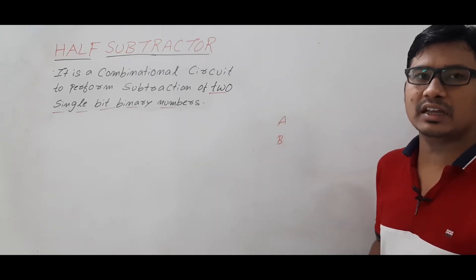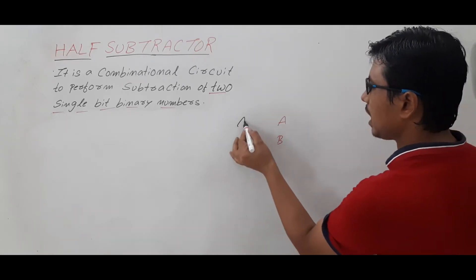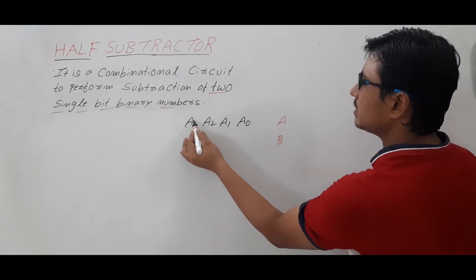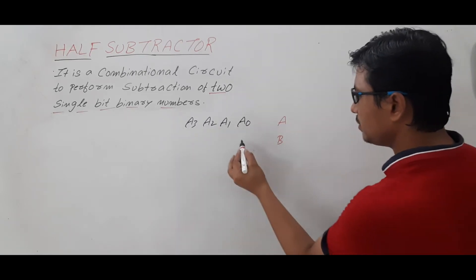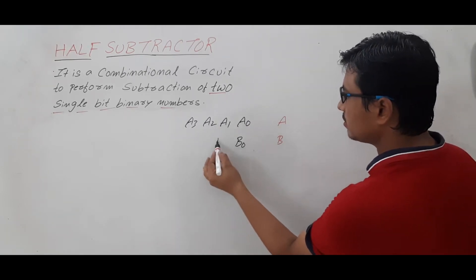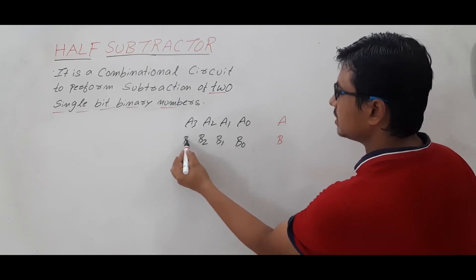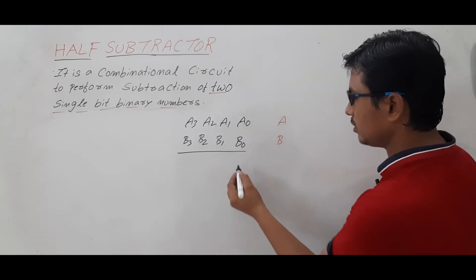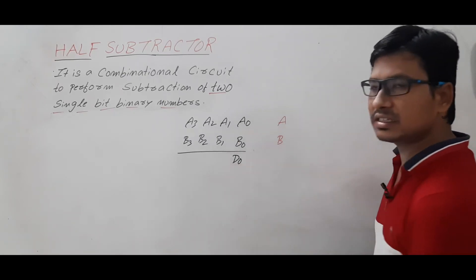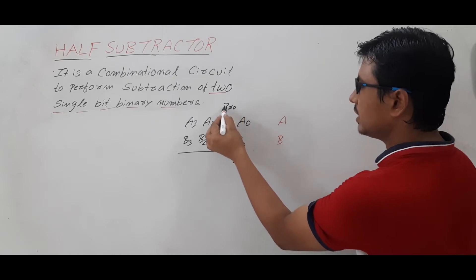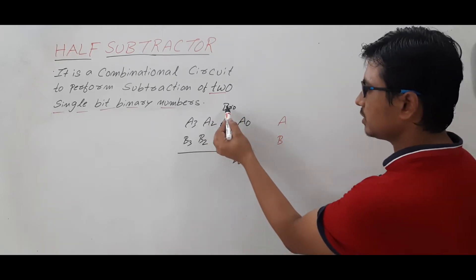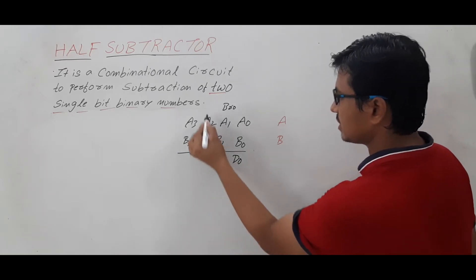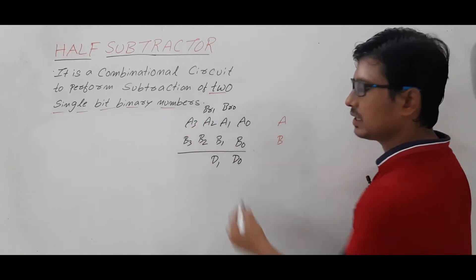Let's say we have two binary numbers A and B, and they are four-bit binary numbers, so we will have A0, A1, A2, and A3, and similarly B0, B1, B2, B3. If I perform the subtraction between A0 and B0, I will get the difference and also the borrow. Then again I will perform the difference between borrow, A1 and B1 to get the difference and the borrow.